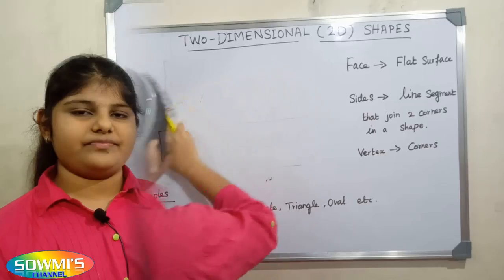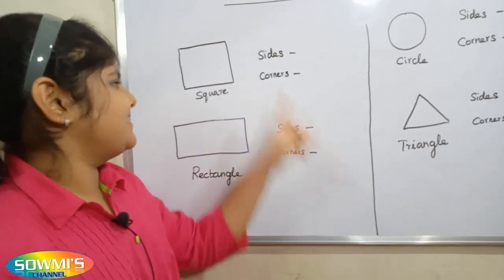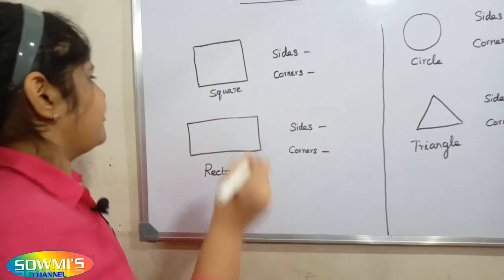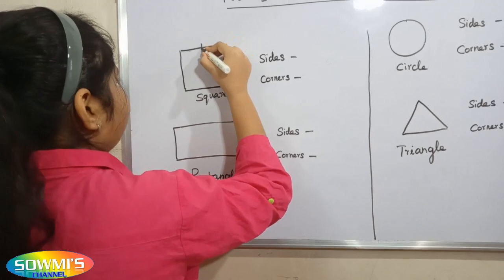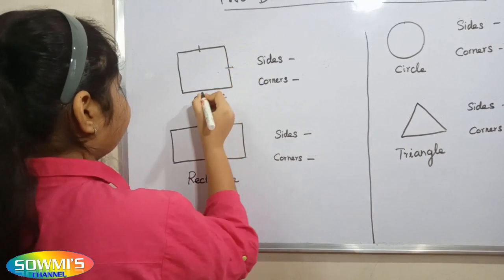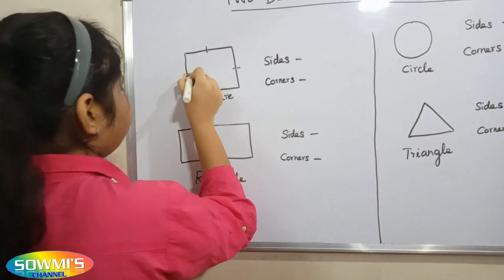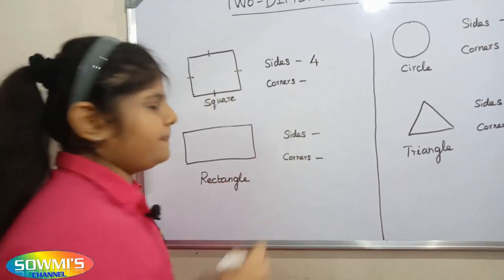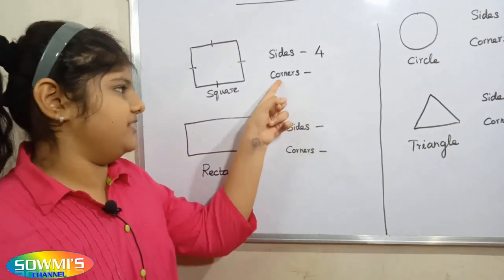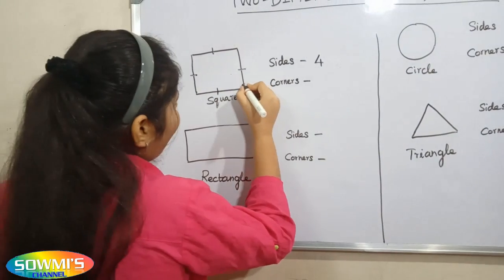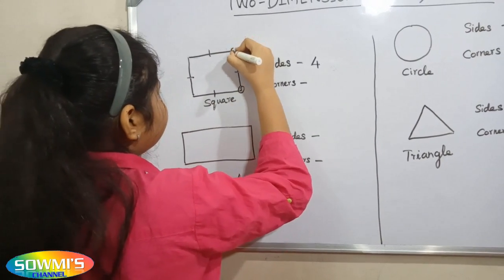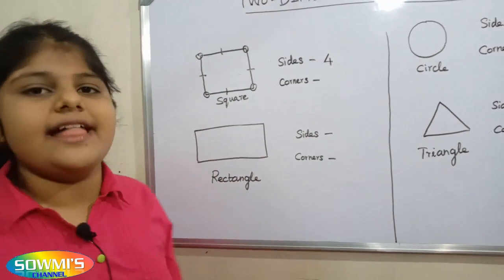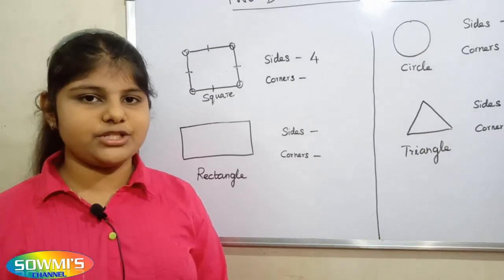First we will count the sides and corners of a square. Counting the sides: 1, 2, 3, 4 — there are four sides. Next we will count the corners: 1, 2, 3, 4 — there are four corners in a square.